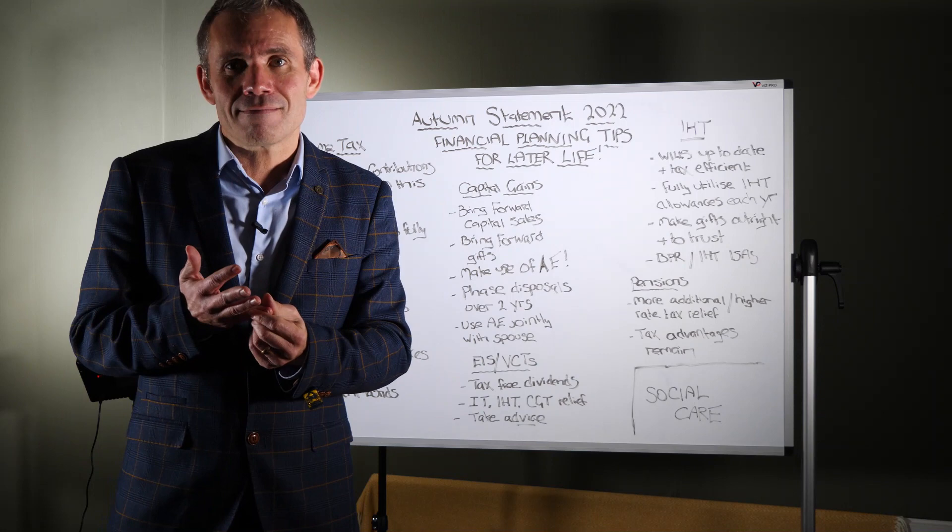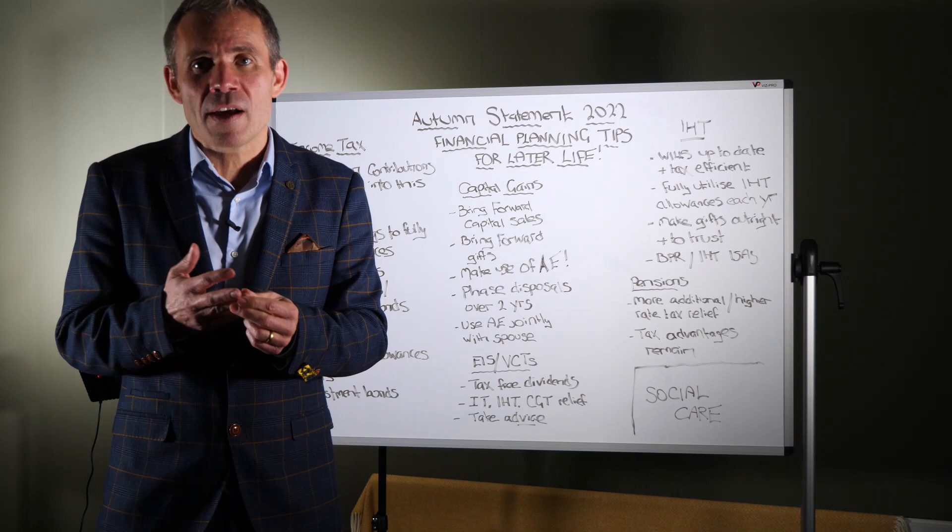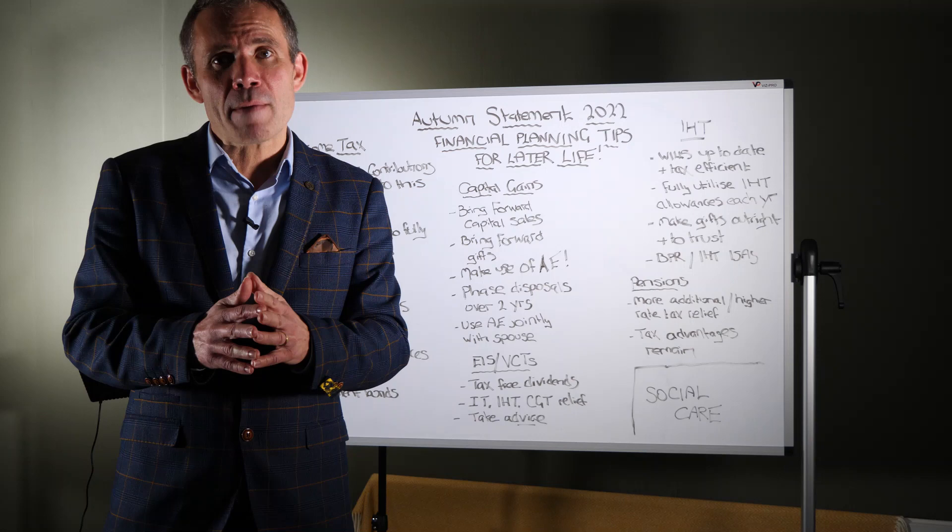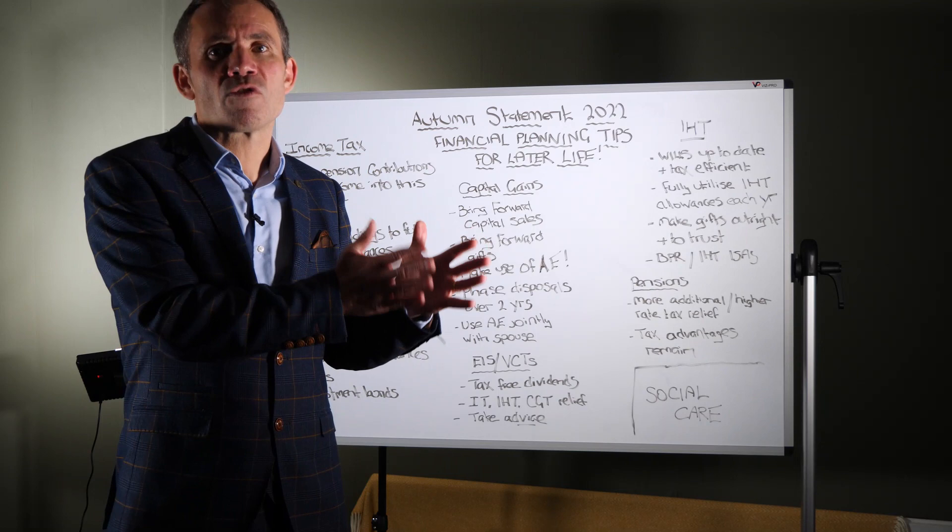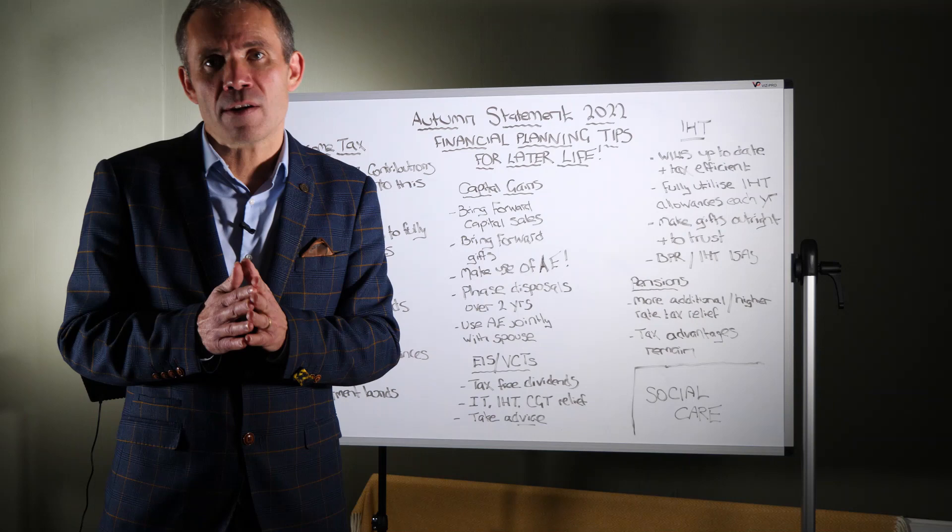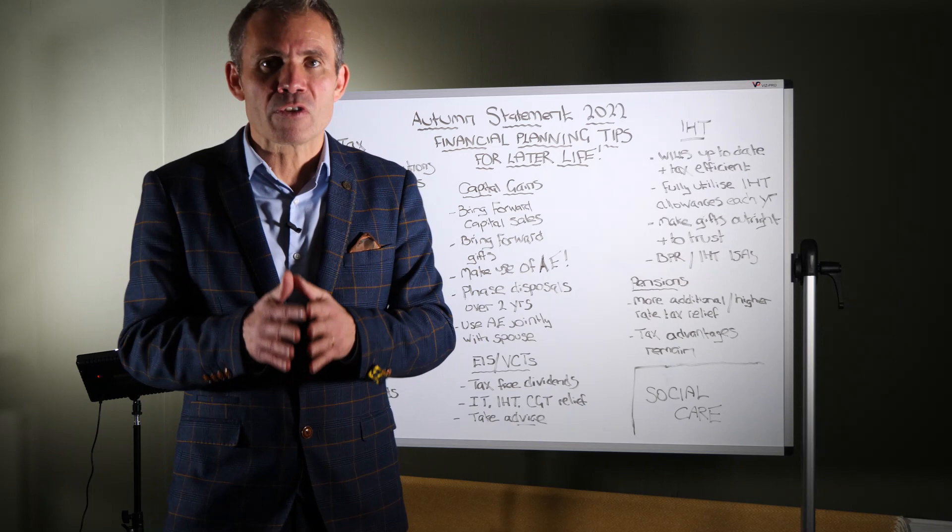They didn't touch pension tax relief. So any pension contributions that you make attract complete 100% income tax relief, which is really valuable and still one of the best investments that you can make. 40% tax relief for higher rate taxpayers, 45% tax relief for additional rate taxpayers, which is really valuable. Just remember that you've got your £40,000 per year allowance, so you can put up to £40,000 to get the tax relief. And if you didn't use the previous three years' allowances, you can carry forward your £40,000 forward to this year.